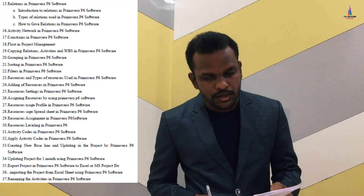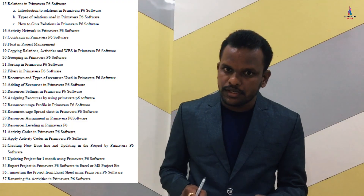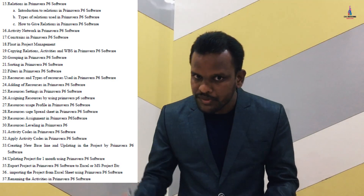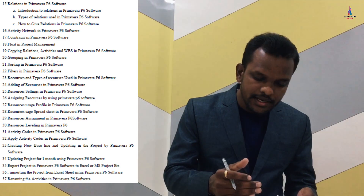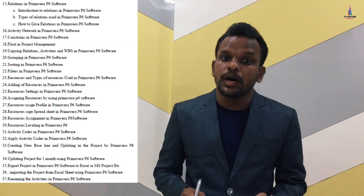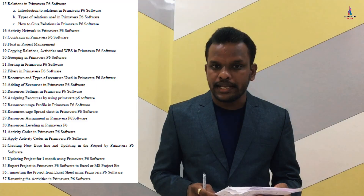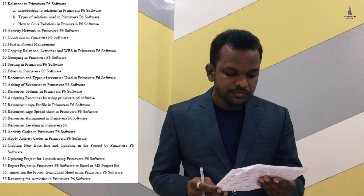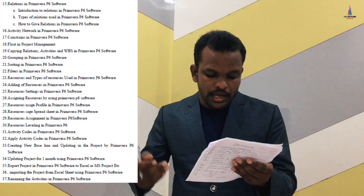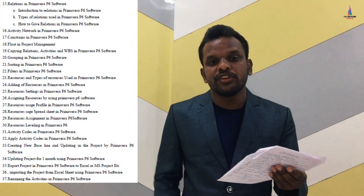Further topics include: what float means and how to use it in Primavera P6, copying of activities and relationships, grouping of activities, sorting of activities, and how to apply filters in Primavera P6. Then comes an introduction to resources, types of resources, how to create resources, how to assign those resources to the project, how to update the project, and duration types in Primavera P6.